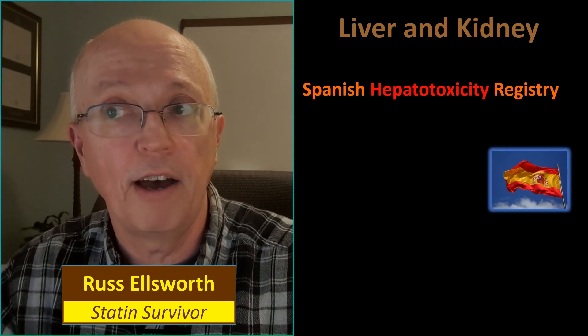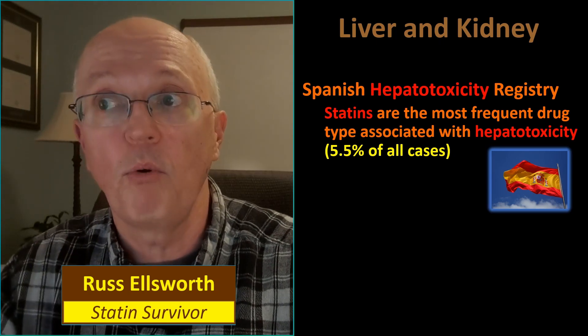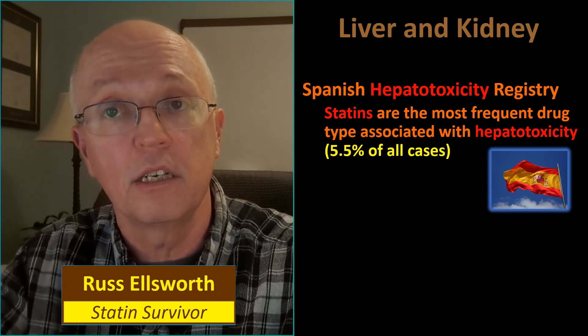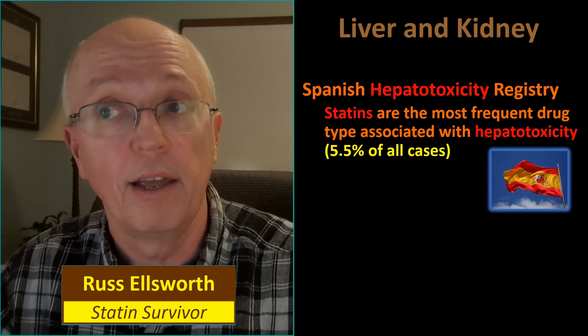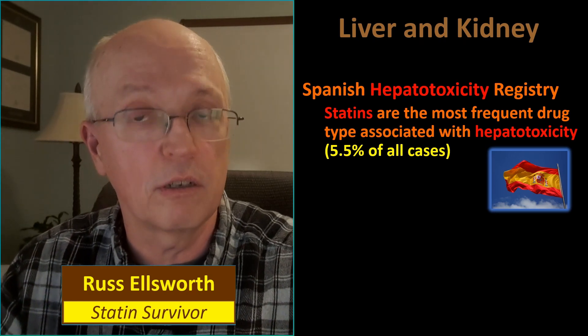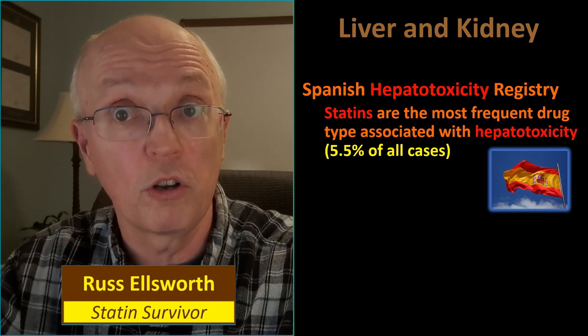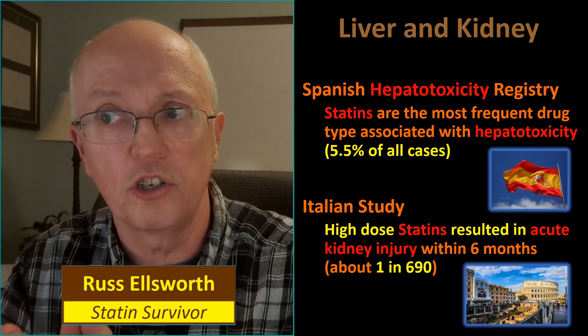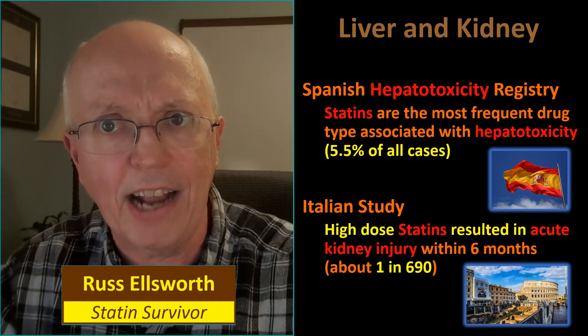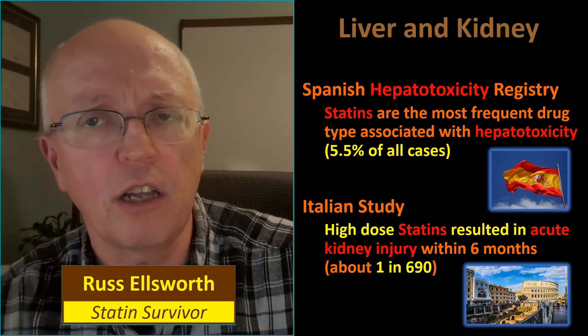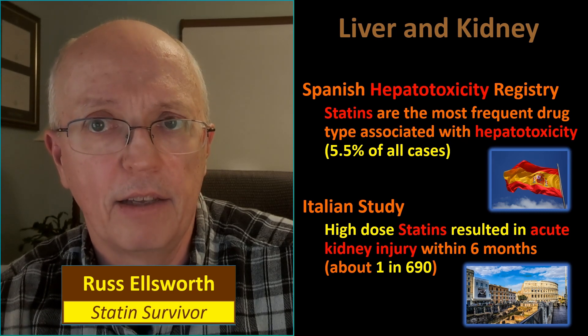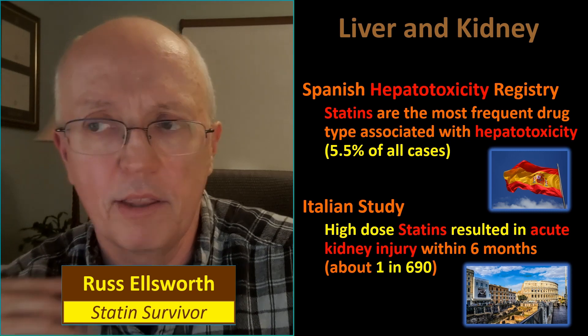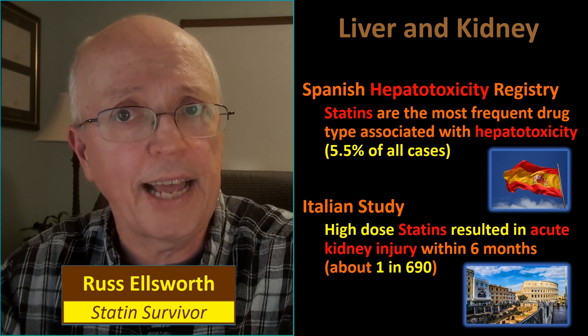Let's talk quickly about liver and kidney. A Spanish hepatotoxicity registry found that statins were the most frequent drug type associated with liver poisoning — 5.5% of all cases, and among drug-induced cases, statins were the most common drug associated with it. There was also an Italian study showing that high doses of statins resulted in acute kidney injury within six months in about 1 in 690 patients. People on lower doses didn't have that kidney injury at that rate, but after 12 months the two rates were the same — basically it's an accumulated thing. The more statins in your system, the more kidney injury cases accumulate.